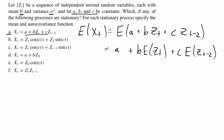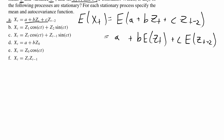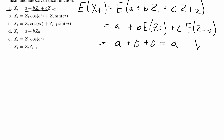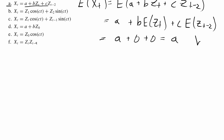Since a is a constant, the expected value simplifies to a plus b times E[z_t] plus c times E[z_{t-2}]. We're given that the expected values of the z_t's are zero, so this equals a plus zero plus zero, which is just a. The expected value of x(t) equals a, which does not depend on t, so we've met the first assumption for weak stationarity.